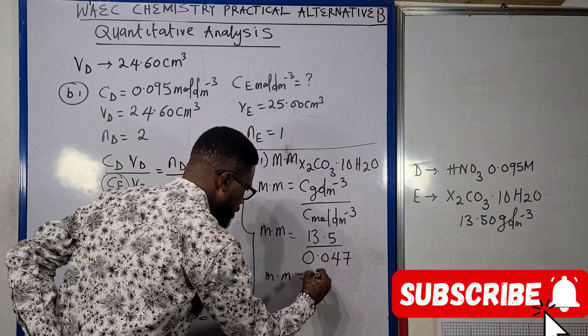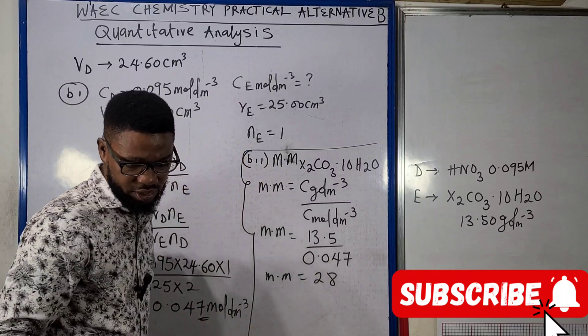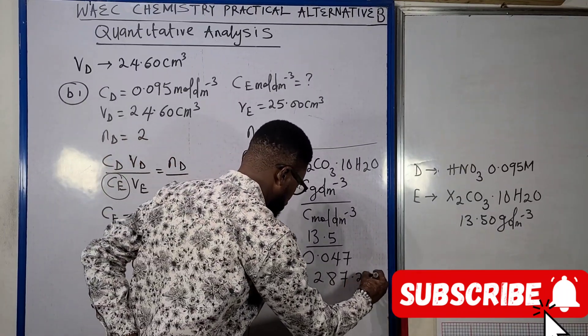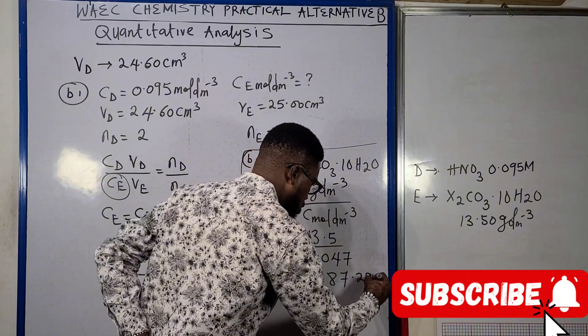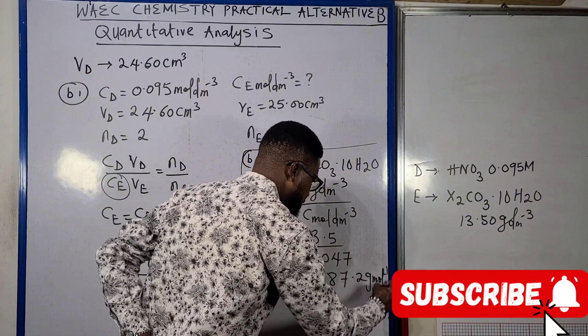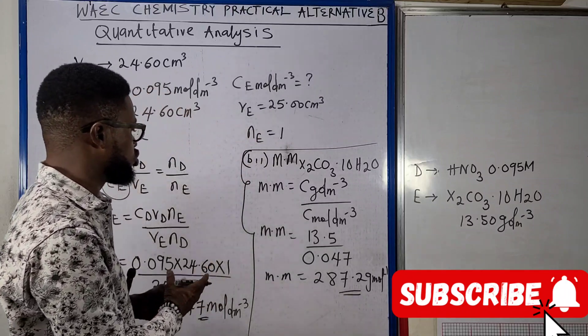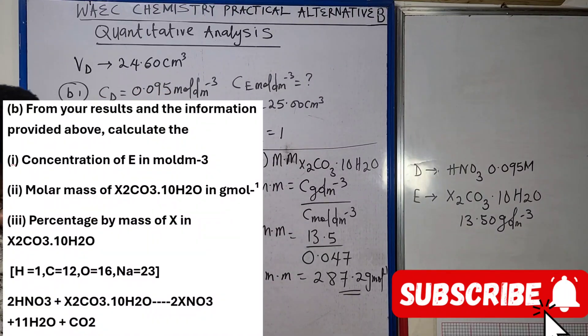So the molar mass here is going to be 13.5 divided by 0.047. When we compute this, the molar mass is going to give us 287.2 grams per mole.